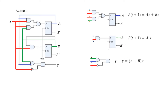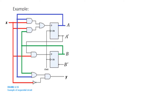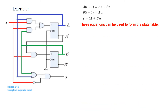Combining all connections — the output of flip flop A feeds into the top circuits, and the output of flip flop B feeds into the other inputs — we get the complete circuit. For this circuit, the state equations are the three we have written. These equations can now be used to form the state table.